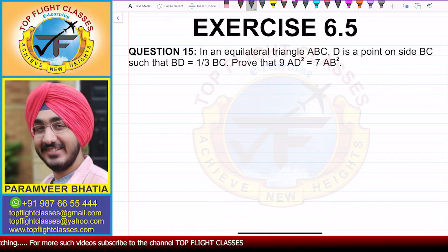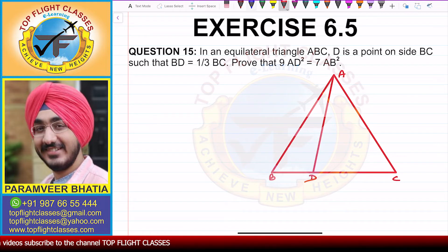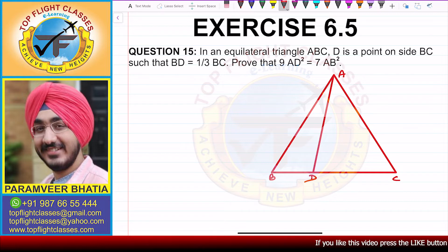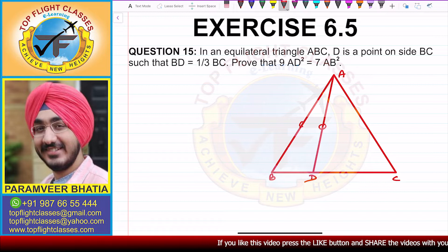Let's solve this question. First, let's draw a diagram. We have an equilateral triangle ABC, and D is a point on side BC such that BD equals one third of BC. We have to prove that 9AD squared — that is this side — is equal to 7AB squared — that is this side.